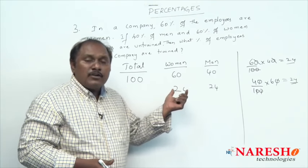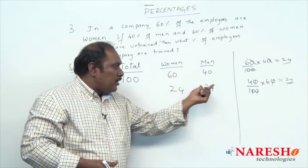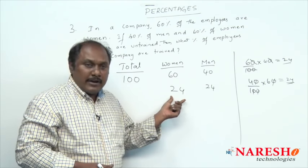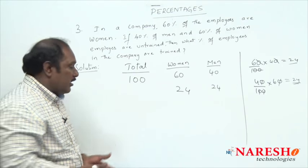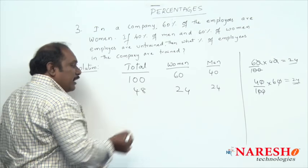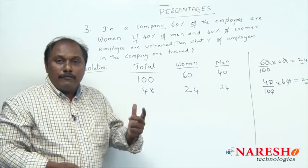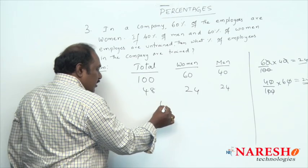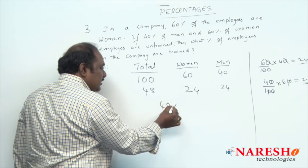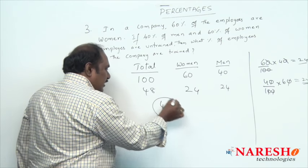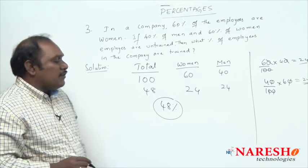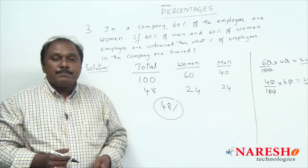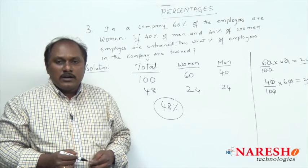Since it is out of 100, it is already a percentage. So in the company, 48 percent of the employees are trained. This is the solution for this problem. Now let us look into the next problem.